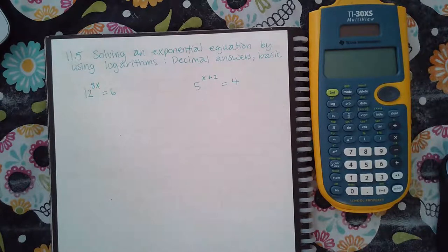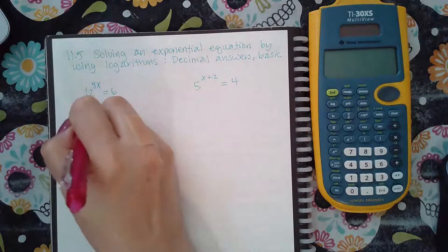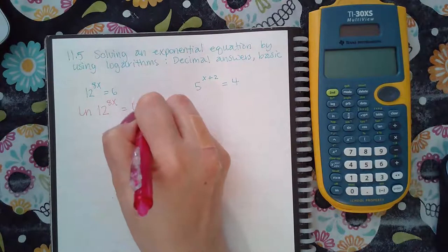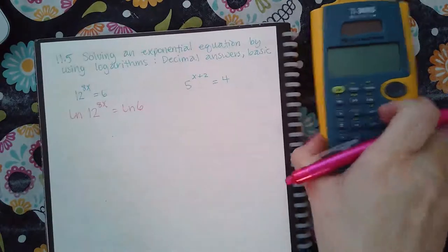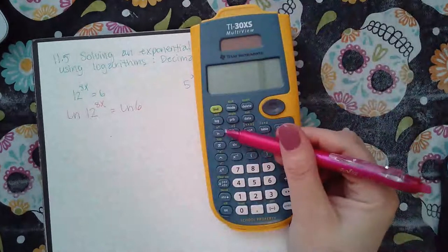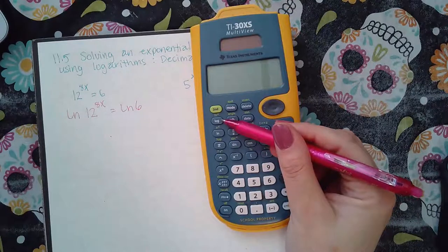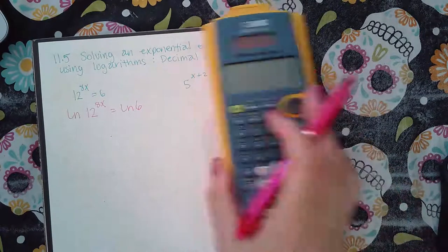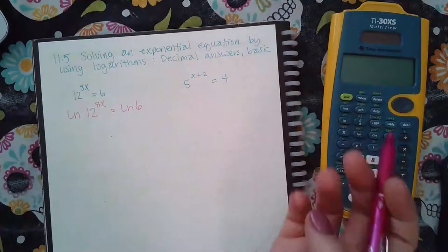So what I'm going to do is I'm going to take the ln of both sides. I just like to use ln whenever I can. I could have just used regular log. But you want to use one of these two buttons because they're either log base 10, which is the common log, or log base E, which is the natural log, so that you can eventually stick the stuff in your calculator.